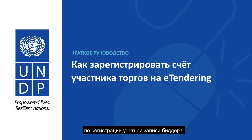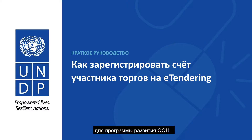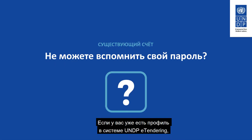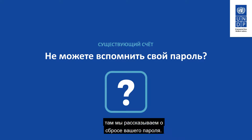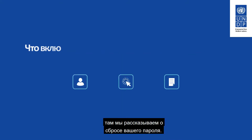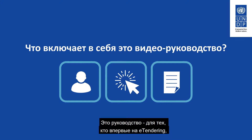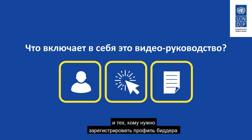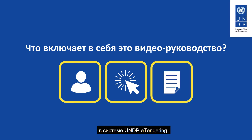Welcome to this video guide on how to register a bidder account in the online eTendering system for the United Nations Development Program. If you have a profile in the UNDP eTendering system but cannot remember the password, do not register again. Skip to the end of this video to see how to reset your password. This guide is for first-time users of eTendering who wish to participate in a UNDP tender as a supplier and need to register their bidder profile on the UNDP eTendering system.